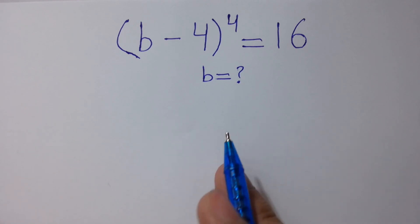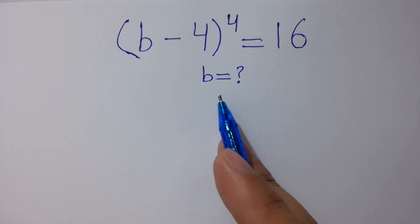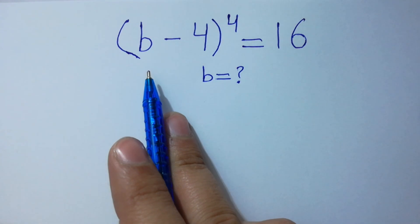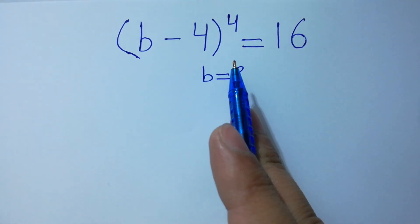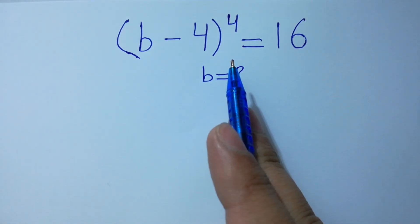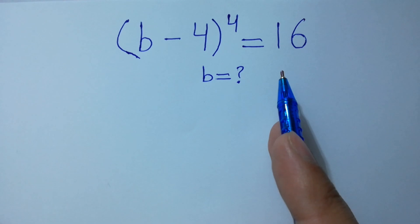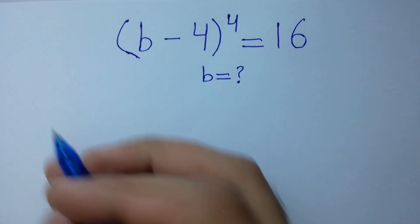Hello friends. Find the value of b if (b-4) to the whole power 4 equals 16. Let's have a solution.